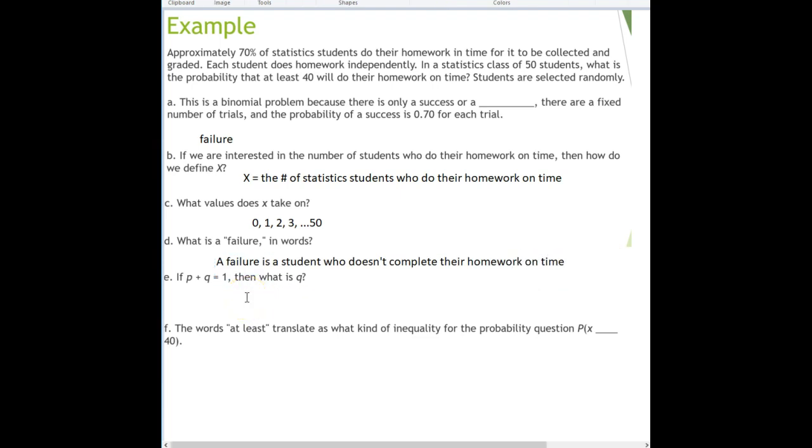If p plus q equals 1, then what's q? We know that p equals the probability of a success equals 70%. So p is 0.70, and 1 minus 0.70 gives us 0.30.